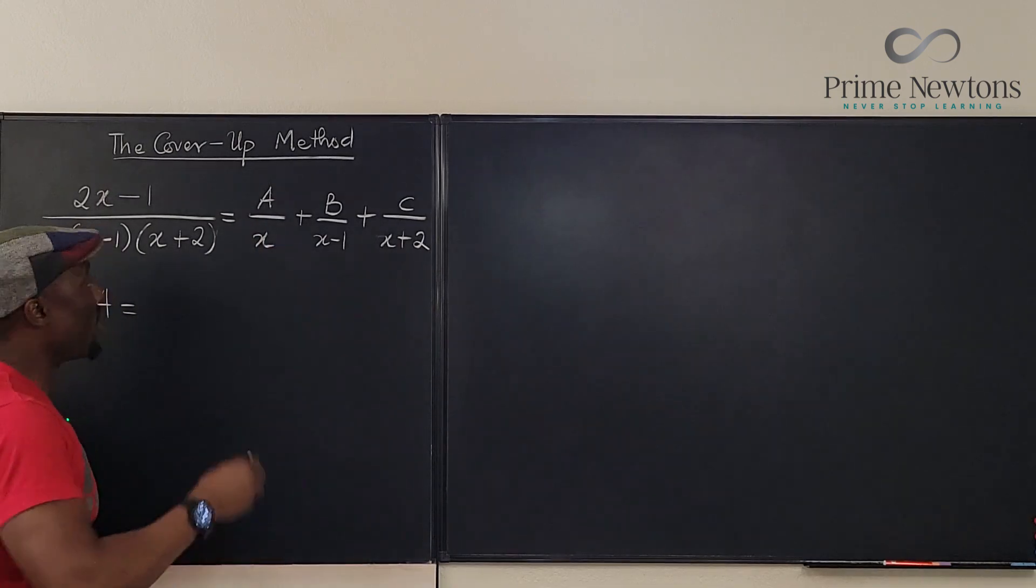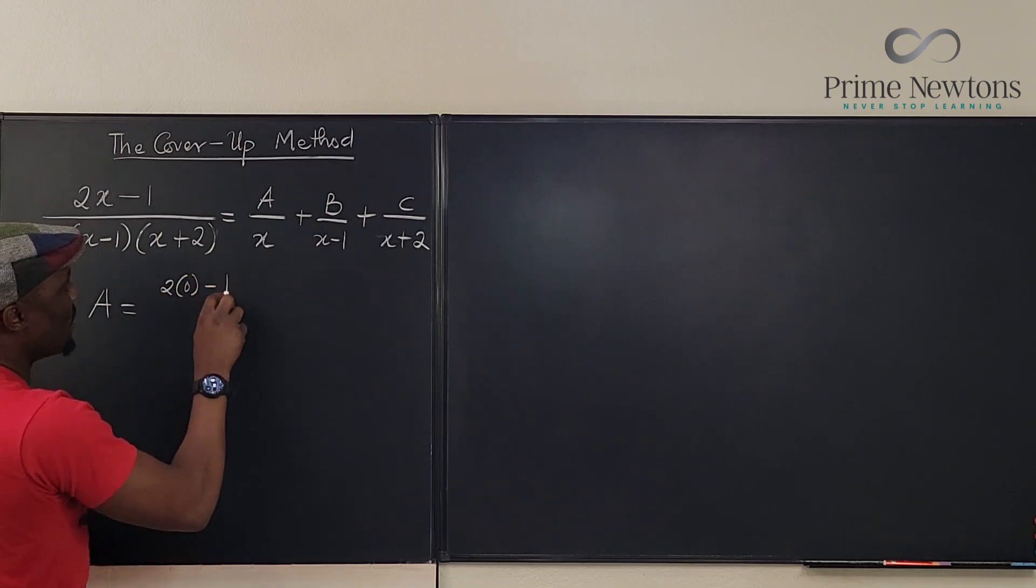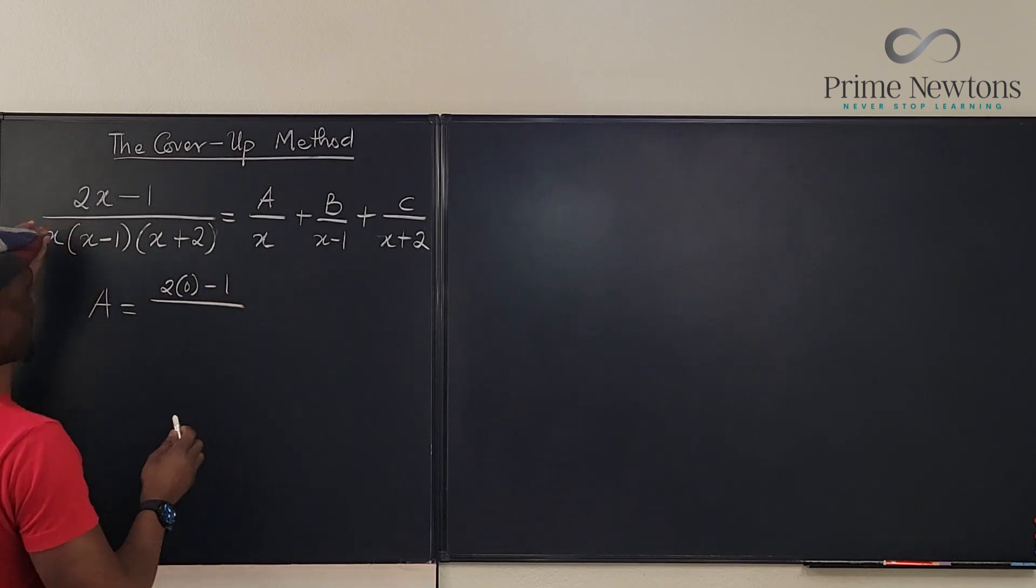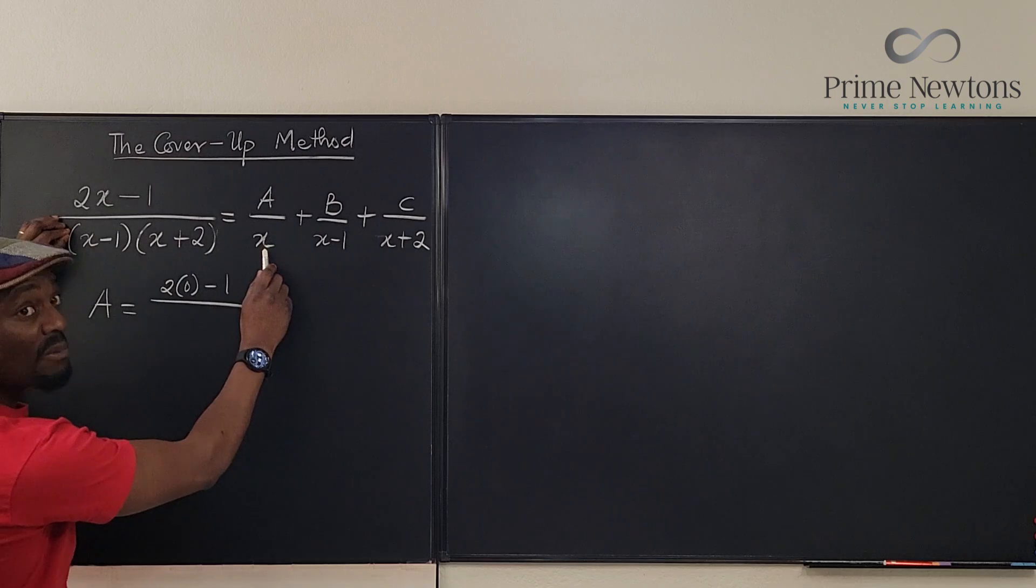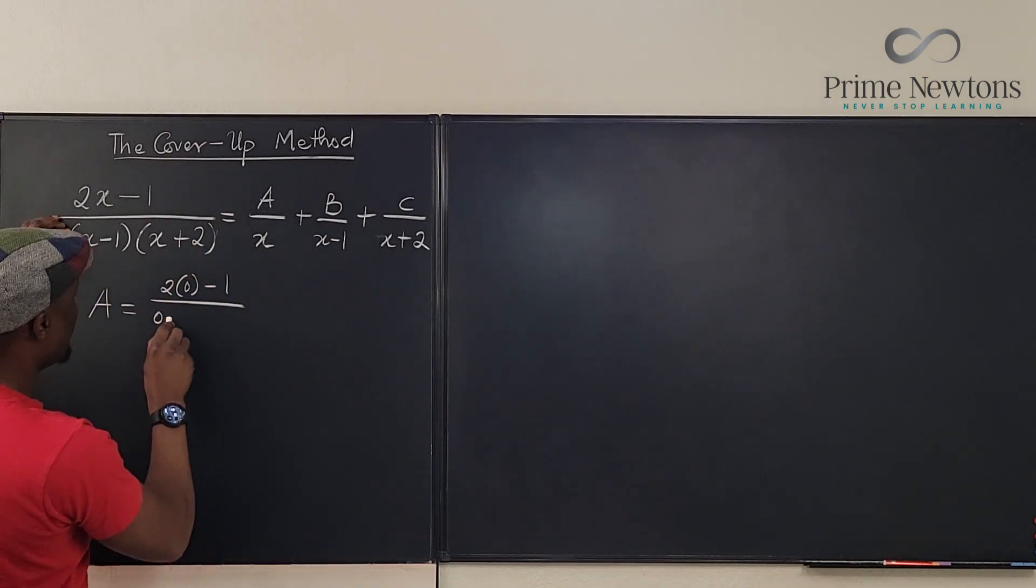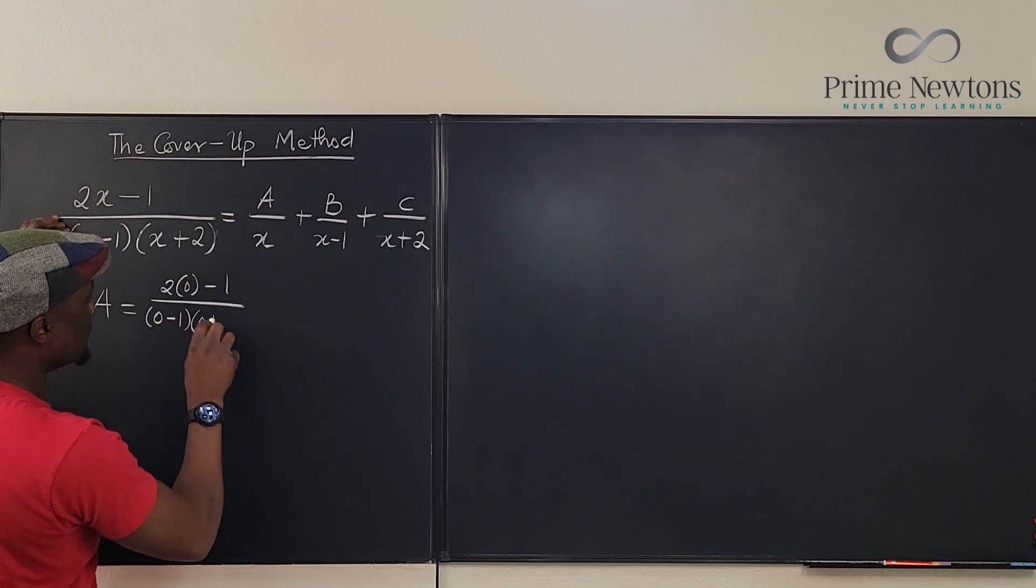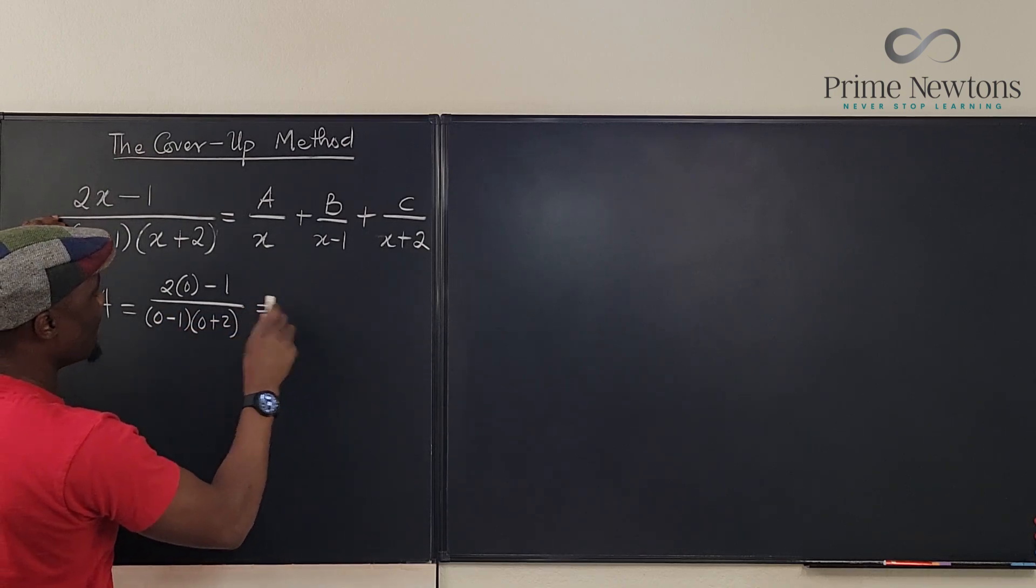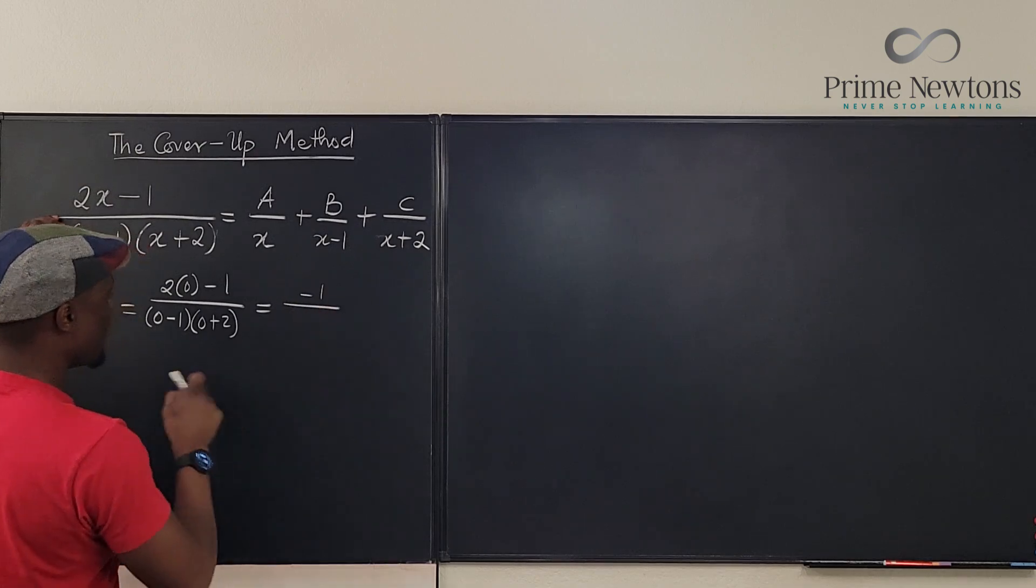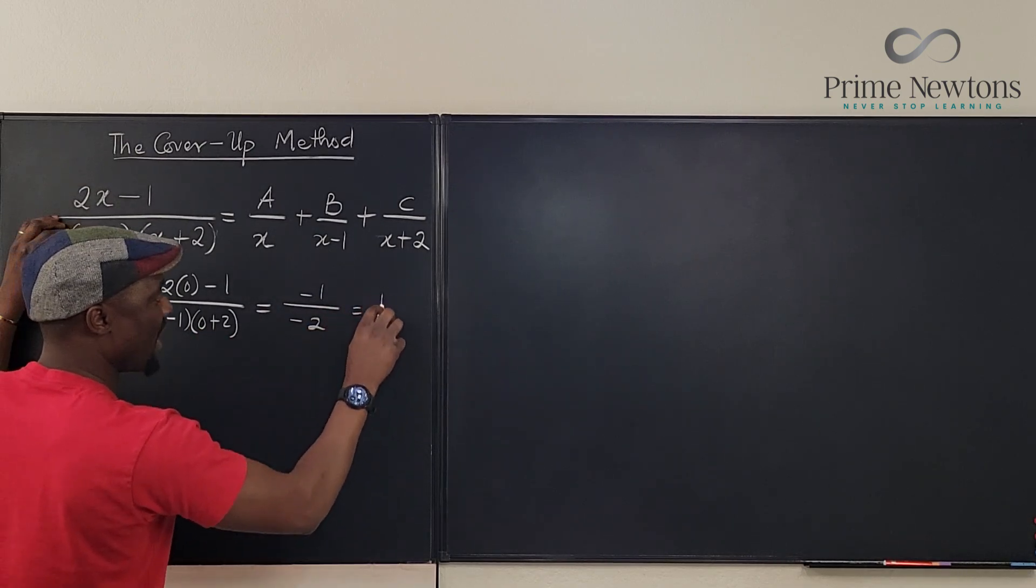I'm gonna say that A will be equal to, you see that's zero that I don't want, I'm gonna plug it in here. It's gonna be 2 times 0 minus 1 divided by, remember this is covered up because it's the number here that we don't want. The rest of it is gonna be 0 minus 1 multiplied by 0 plus 2. You notice that this gives me 0 minus 1 over this is minus 1 times 2 which is minus 2 and this is 1 half.